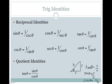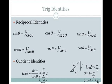So sine equals y over h, and cosine equals x over h. Let's verify this identity by substituting in: sine over cosine is (y/h) divided by (x/h). When you divide by a fraction, you multiply by the reciprocal, so this becomes (y/h) times (h/x). The hypotenuse cancels out, and we are left with y over x.